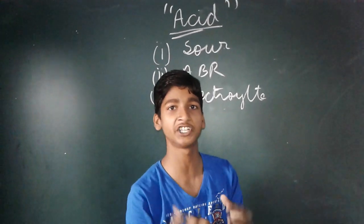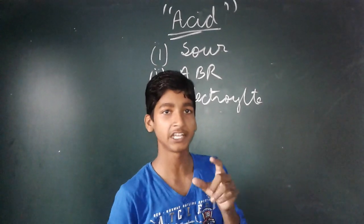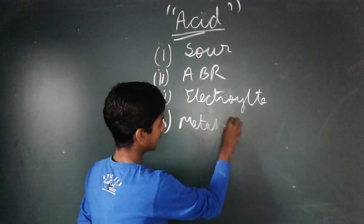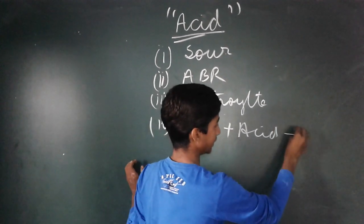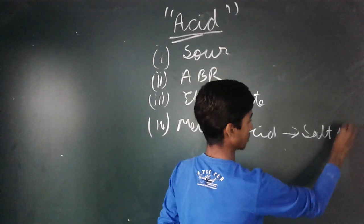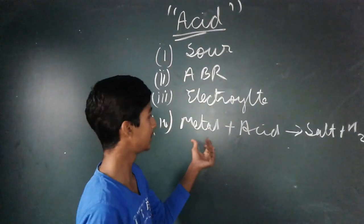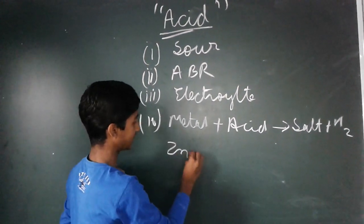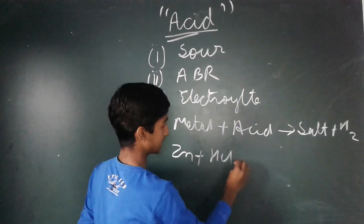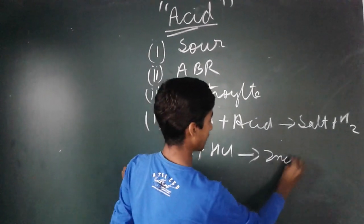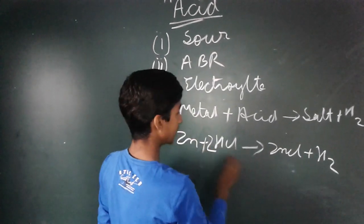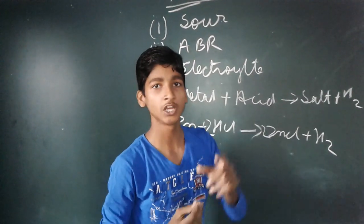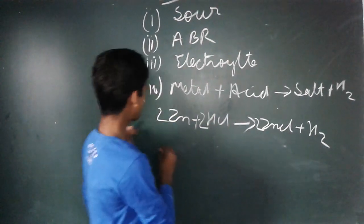The third property is that when metal reacts with acid, it forms salt and hydrogen gas. Whenever acid reacts with metal, it will produce salt and hydrogen gas. For example, suppose the metal is Zn and the acid is HCl — zinc chloride will be the salt formed and hydrogen gas will evolve. You can confirm hydrogen gas by the pop sound test.